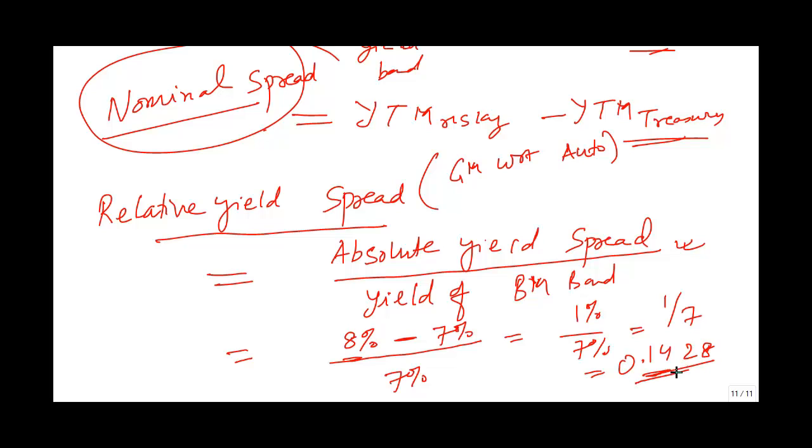This is your relative yield spread. Relative yield spread is given as the absolute yield spread divided by the yield of the benchmark bond.